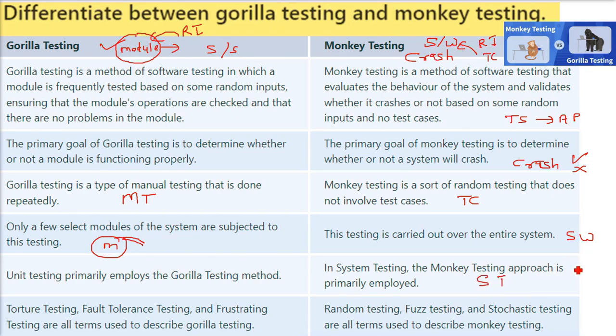Monkey testing corresponds to system testing. That is, the whole software is made with any subsystem or hardware or database. We combine and then test for random input. This is a kind of system testing whereas gorilla testing is unit testing.